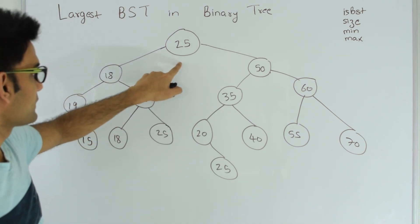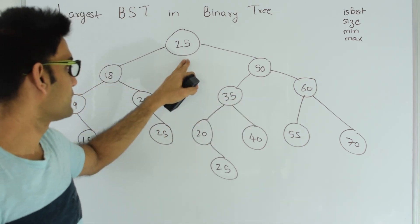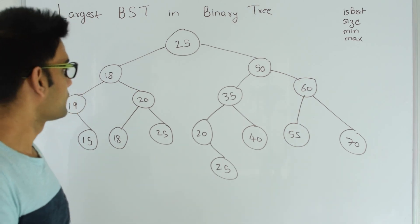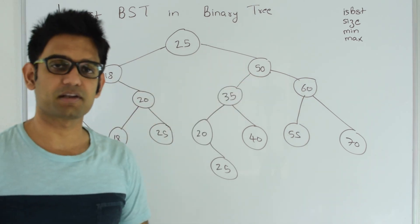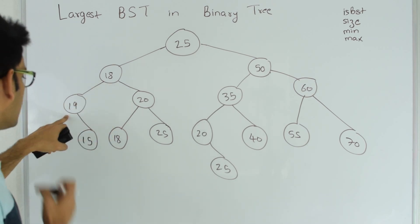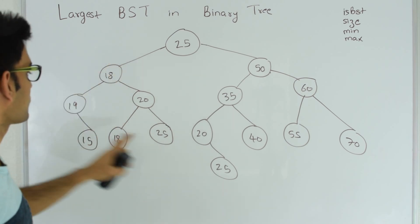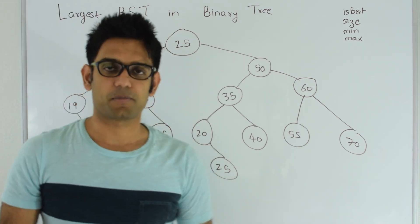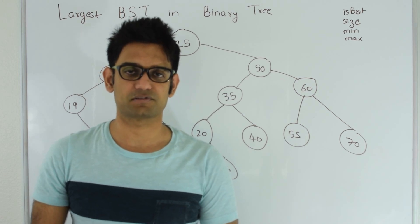So for node 25, 20 is less than 25 but it is on the right side of 25, so this tree with 25 as a root is not a binary search tree. Then we fan out on the left side and right side and try to find the largest binary search tree. For node 18, 19 is greater than 18 but it is on the left side, so this subtree is also not a binary search tree. The problem with this approach is it takes O(n²) time to find the largest binary search tree.